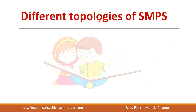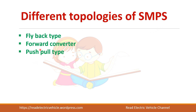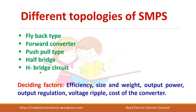There are different topologies of SMPS: flyback type, forward converter, push-pull type, half-bridge, and full-bridge. You can choose any type of SMPS depending on various factors like efficiency, size, weight, output power, output regulation, voltage, ripple allowed, and cost of the components. Based on these factors you can choose any of the topologies for your application.